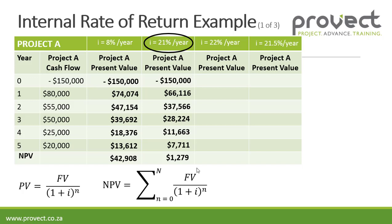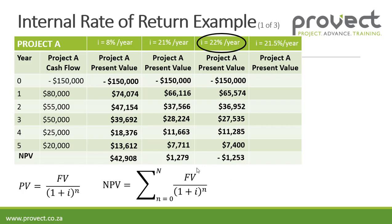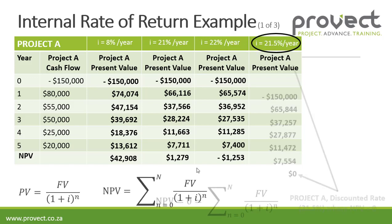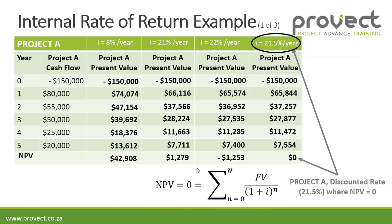Let's say i is 21% and we calculate the present value — the net present value is $1,279 when i is 21%. So we need to find when the net present value is 0. We increase i by 1% to 22%, and the net present value is minus $1,252. So the net present value will be 0 between 21% and 22%. At i = 21.5%, the net present value is 0. So the internal rate of return for project A is 21.5%.